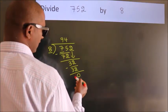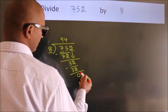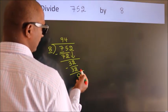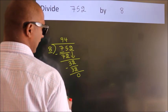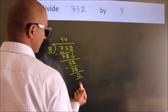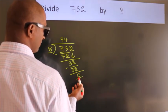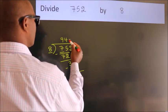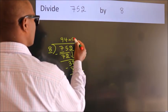After this, there are no more numbers to bring down. We got remainder 0. So the quotient is 94.